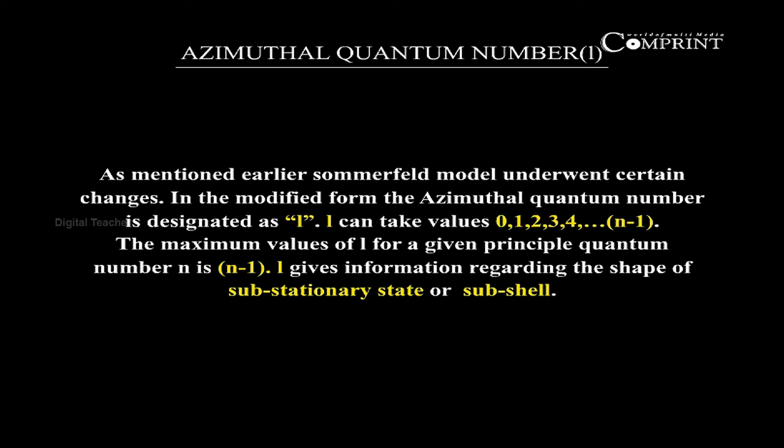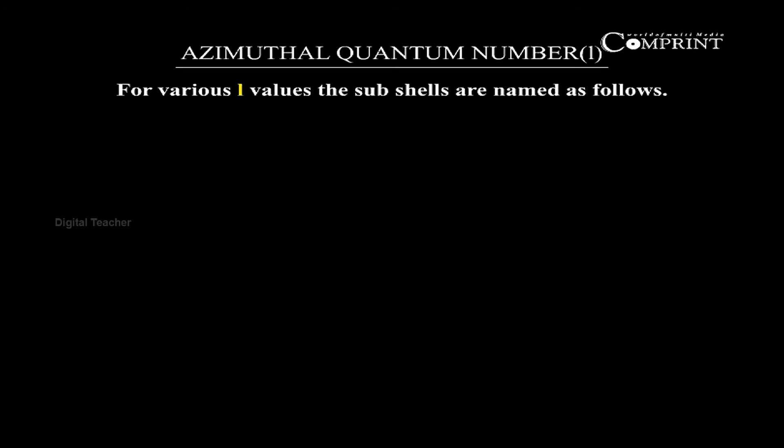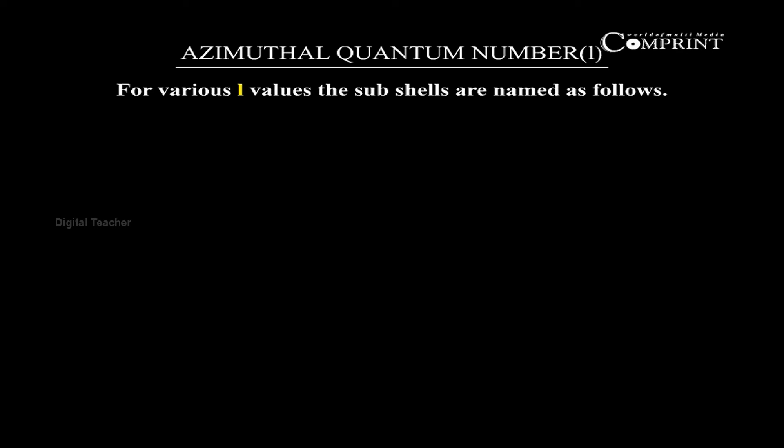L gives information regarding the shape of the stationary state or subshell. For various L values, the subshells are named as follows: for L = 0, 1, 2, 3, 4, the names of the subshells are S, P, D, F, G respectively.